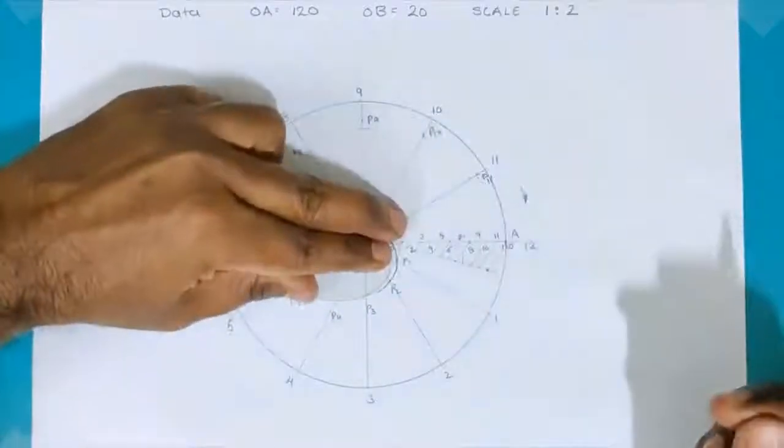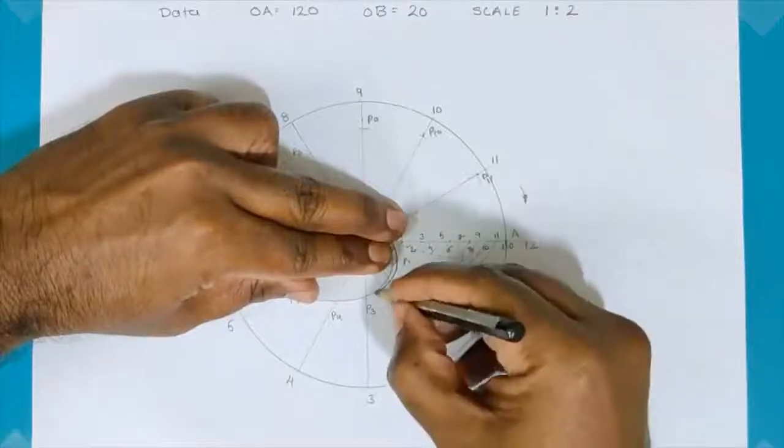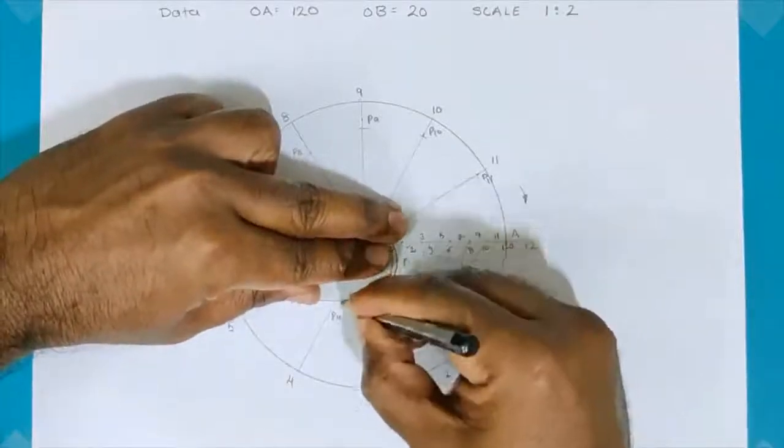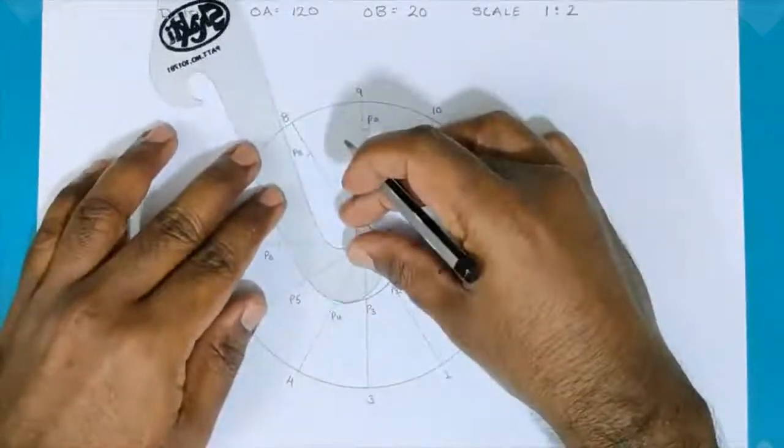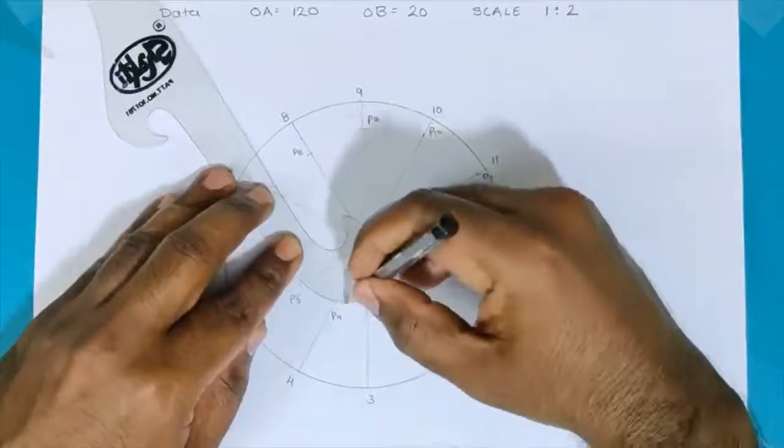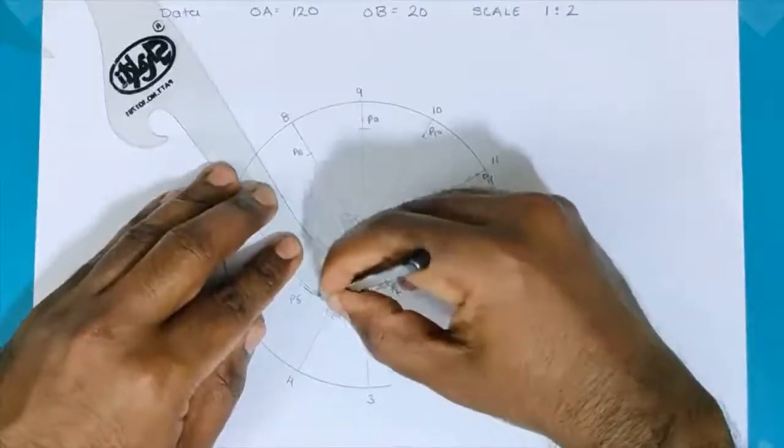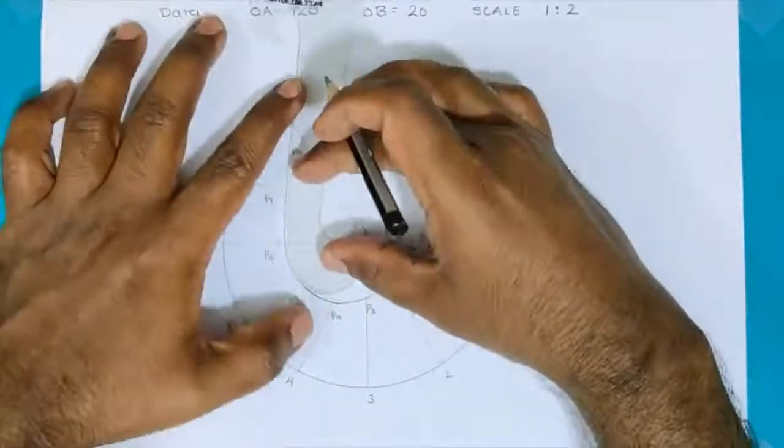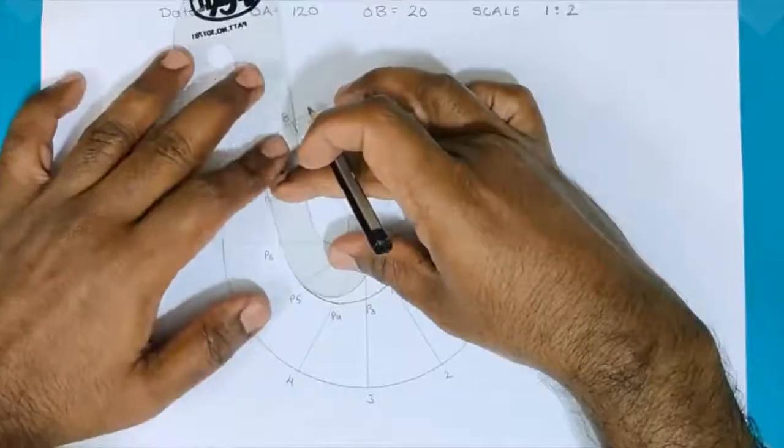So, I use the edge of the French curve, join 2 points at a time. And this is how I will be completing the whole Archimedean spiral.